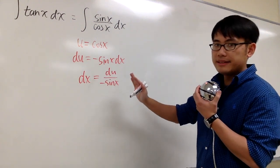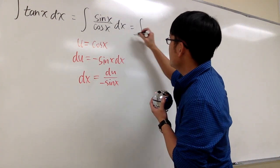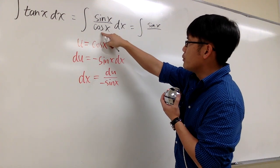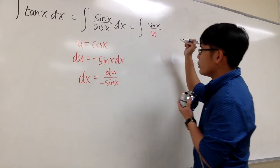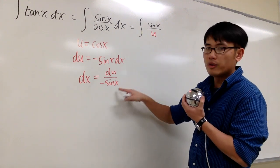And we are ready to take this integral into the u world. We'll see, this is the same as the integral sin x stays on the top for now. Over on the bottom, which is cos x, but we said this is u. So we have sin x over u.